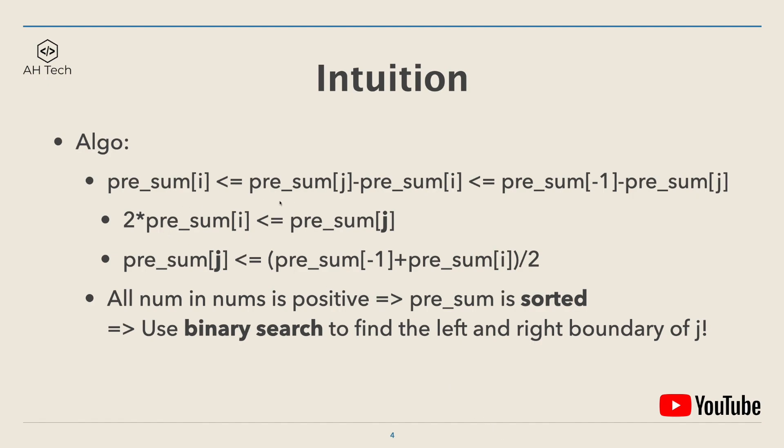Next, if we try to rearrange this key condition, we will see that pre_sum[j] will have a left boundary. Now the goal will become finding the left and right boundary of pre_sum[j] to determine how many j's will satisfy these key conditions. There's another key constraint: all nums in the nums array are positive, so the prefix sum array will be sorted in nature because they are just accumulated sums. Since pre_sum is sorted, we can use binary search to find the left and right boundary of j.